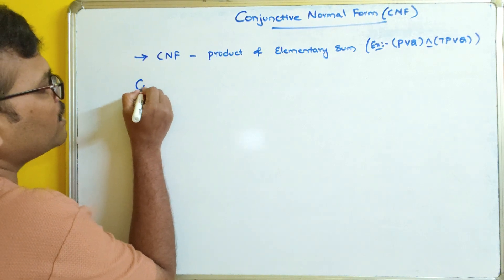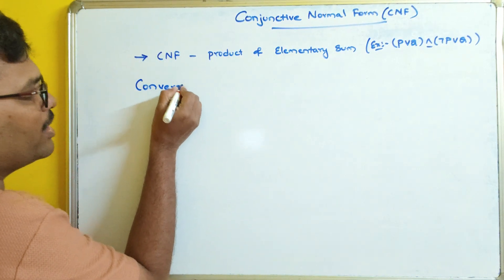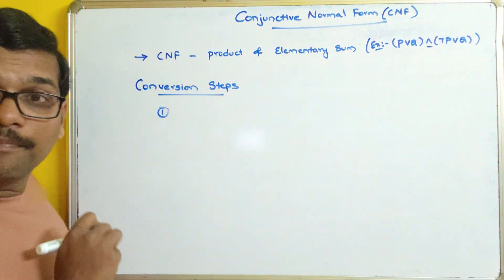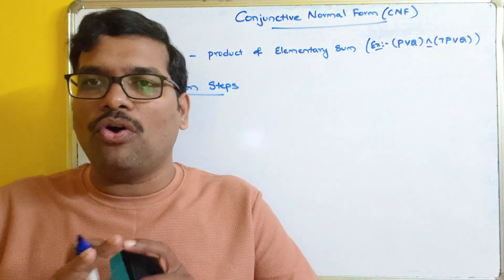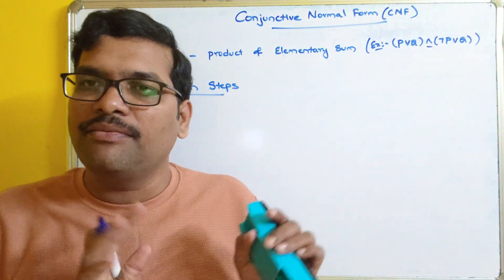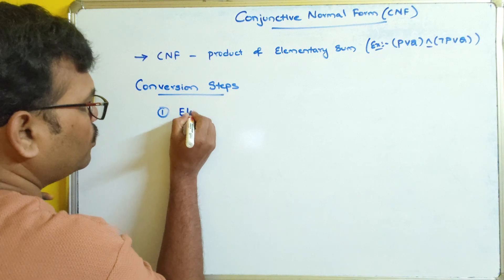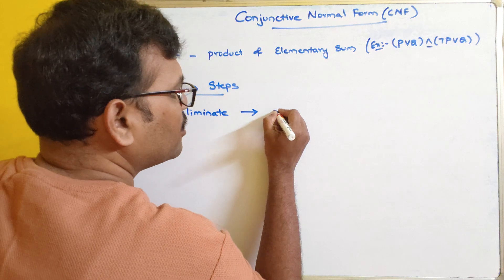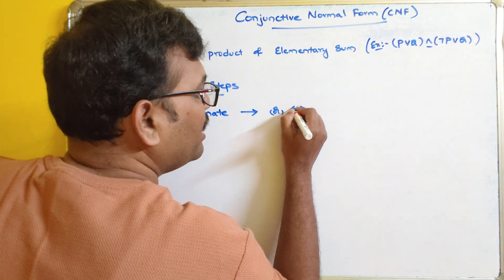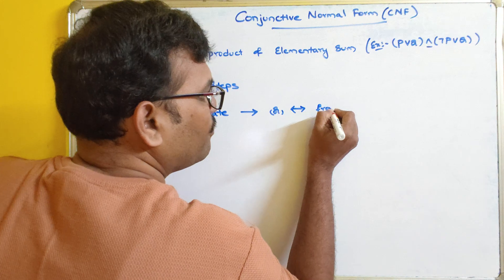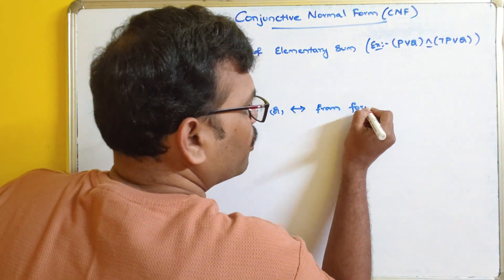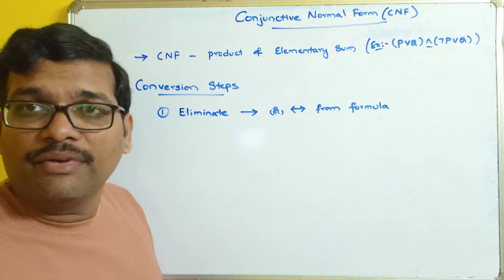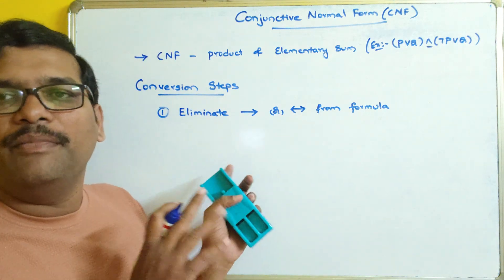So the conversion steps. Step one: we have to eliminate the implies or double implies — that is, the conditional and bi-conditional — from the formula. We have seen different laws of logic and logical equivalences, and from those we have to eliminate these connectives.